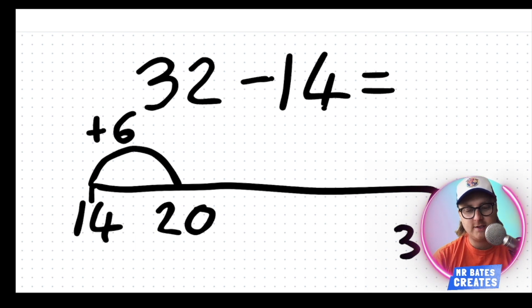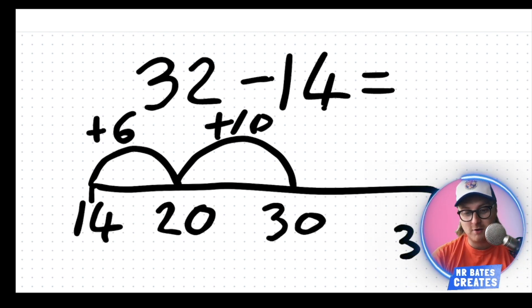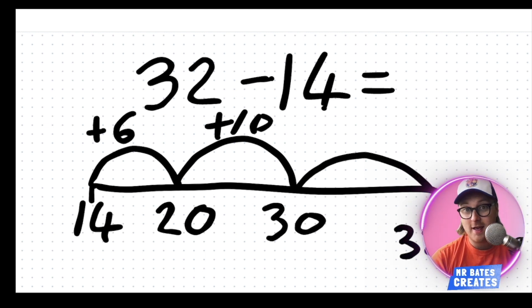Now, 20 to the next 10, what's that going to be? Of course, it's 30. Well done if you're working on your whiteboard and your piece of paper along with me on this one. And then 30 to 32 is a jump of 2. Of course it is. Well done.